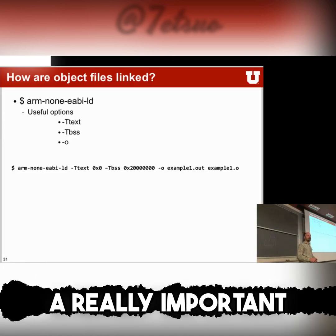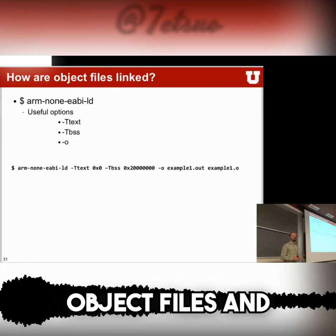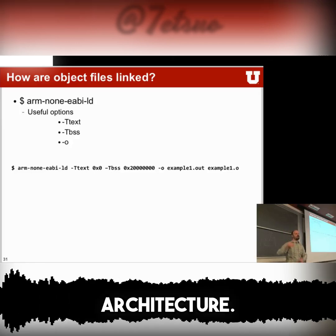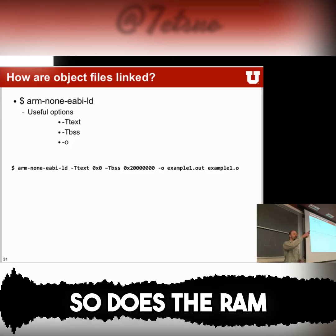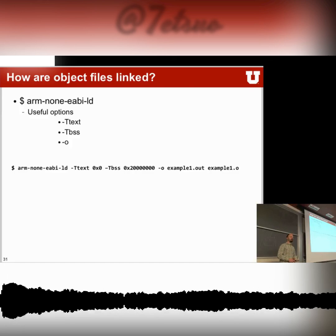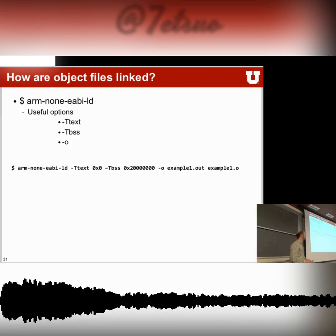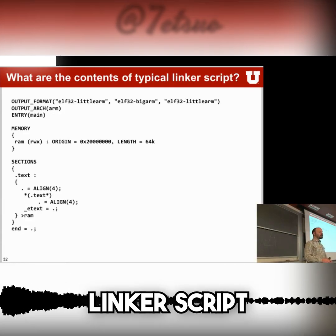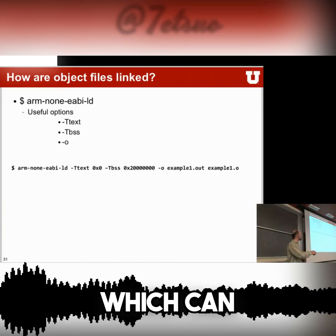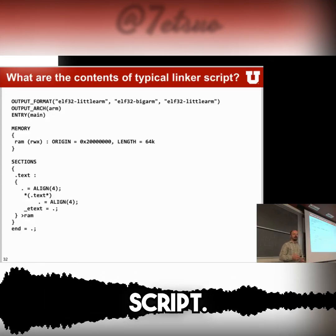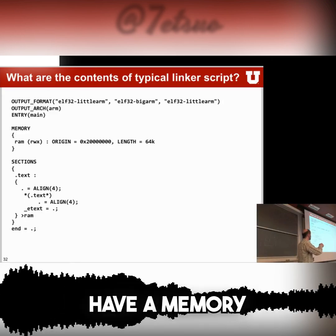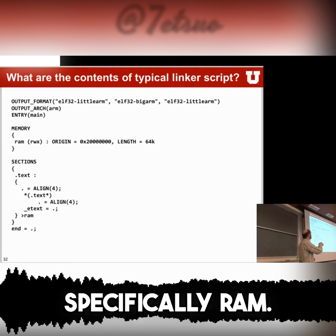The linker has a really important job: it takes different object files and places them in the right memory locations inside your architecture. A linker script is how you specify this instead of giving all the parameters on the command line, which can be tedious. This is a very simple linker script — what you tell it is that you have a memory location, specifically RAM.